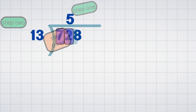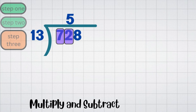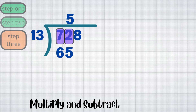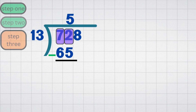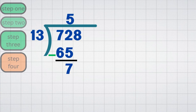Step 3: Multiply and subtract. Multiply 5 by 13 equals 65. Subtract: 72 minus 65 equals 7. Step 4: Bring down the next digit. Bring down the 8, making the new number 78.